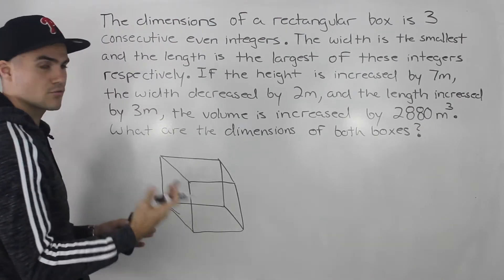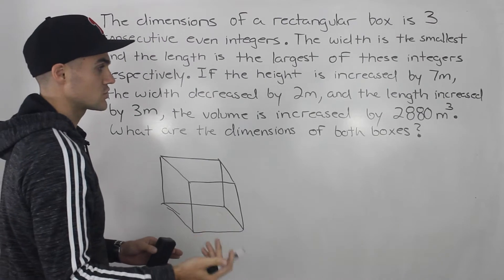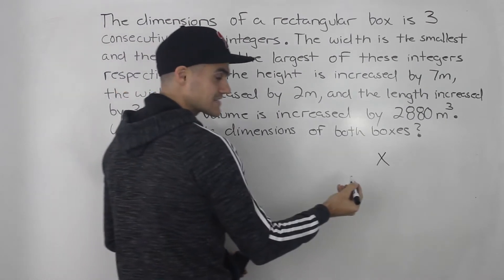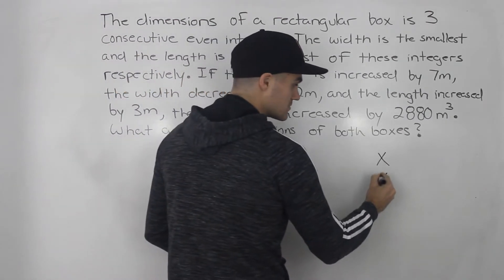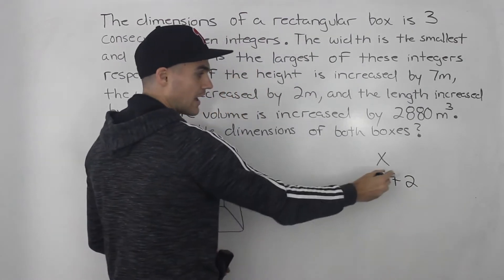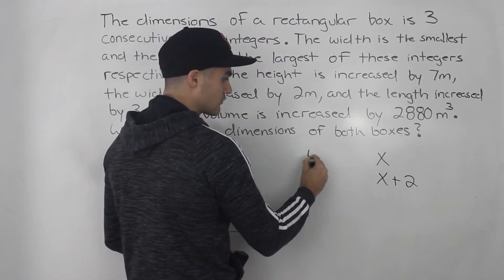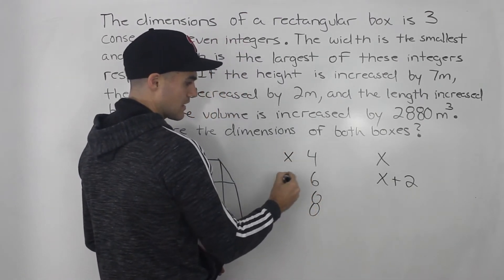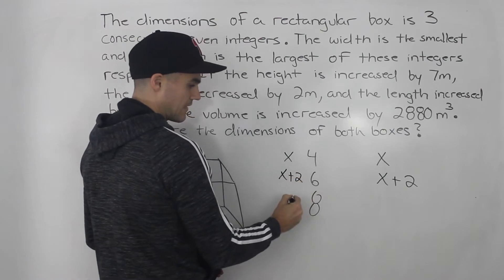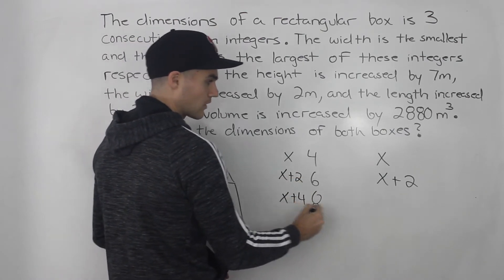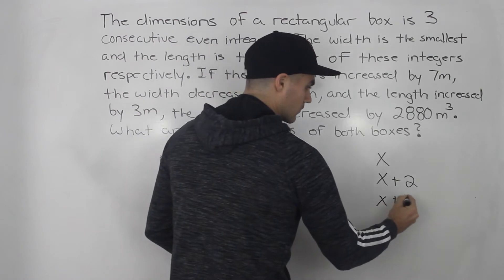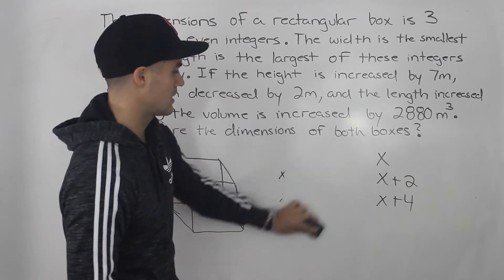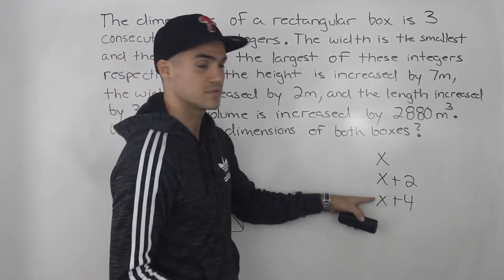So how can we represent three consecutive even integers with variables? Let's say that the first integer is x. The next even integer is going to be x plus 2, because consecutive even integers have a difference of two. For example, even integers like 4, 6, and 8 — if 4 is x, then 6 is x plus 2, and 8 is x plus 4. So this list is three consecutive even integers with a space of two between all of them.